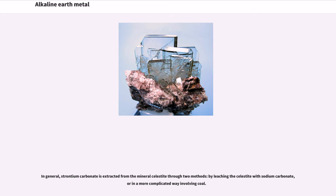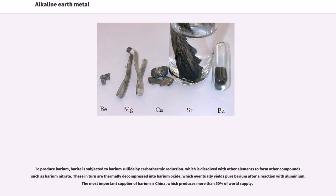In general, strontium carbonate is extracted from the mineral celestite through two methods: by leaching the celestite with sodium carbonate, or in a more complicated way involving coal. To produce barium, barite is subjected to carbothermic reduction to form barium sulfide, which is dissolved with other elements to form other compounds, such as barium nitrate. These in turn are thermally decomposed into barium oxide, which eventually yields pure barium after a reaction with aluminium. The most important supplier of barium is China, which produces more than 50% of world supply.